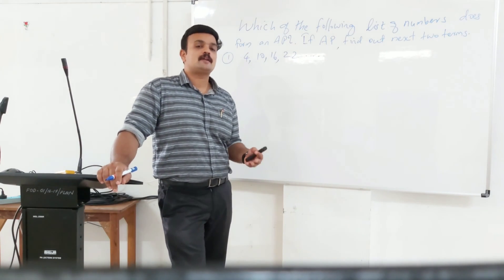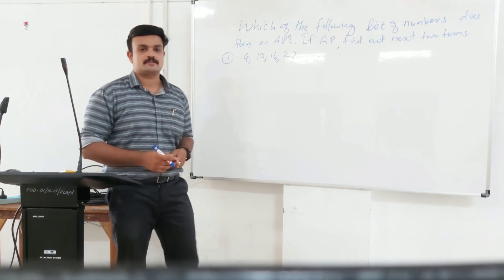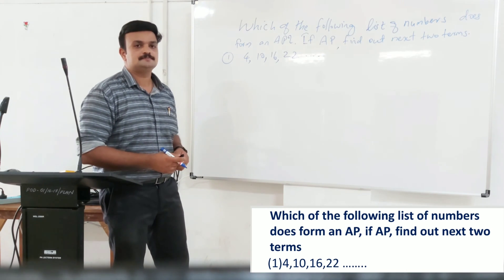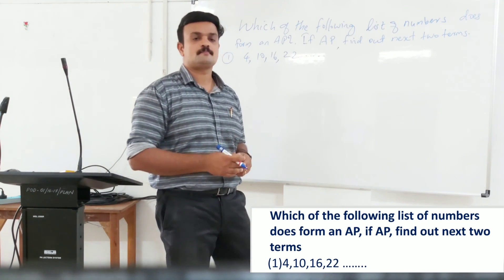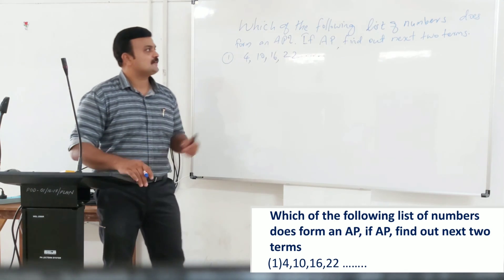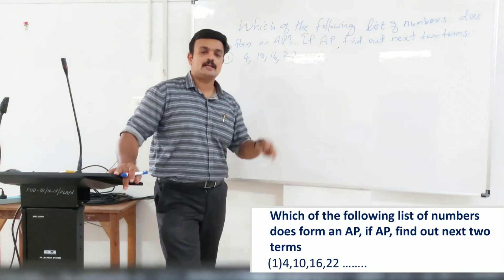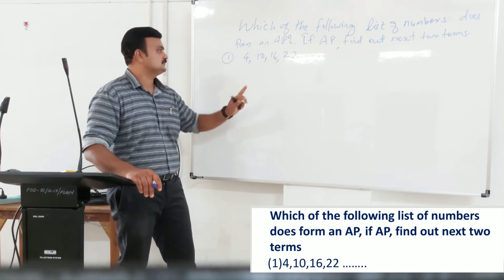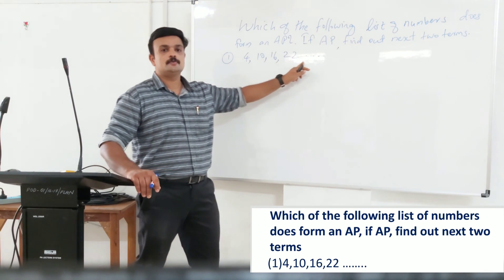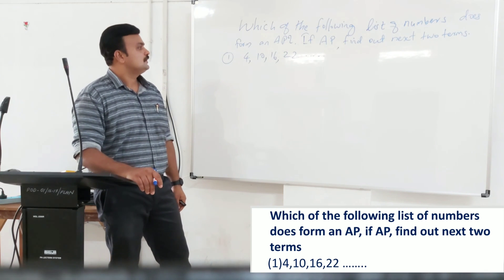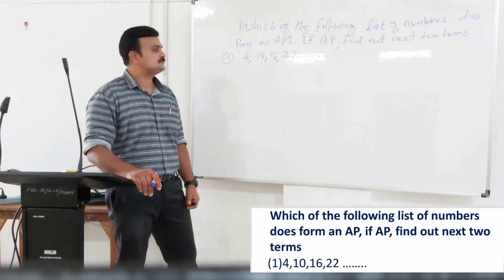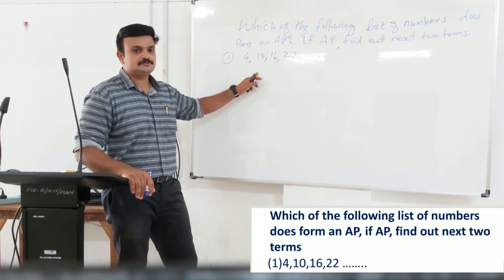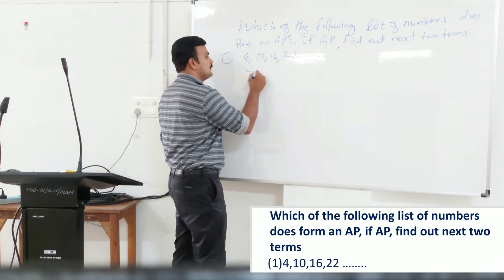Let us look at some more examples to grasp the basic concept of Arithmetic Progressions. The question is: which of the following list of numbers forms an AP? If AP, find out the next two terms. We have been asked to check whether the series 4, 10, 16, 22, and so on is an AP series. If it is, find out the next two terms. In order to ensure that this is an AP series, we have to find out the common difference.